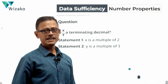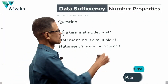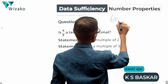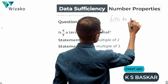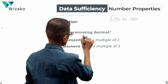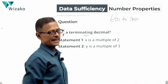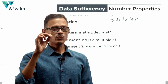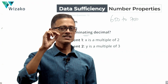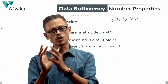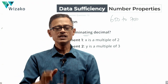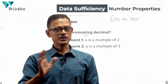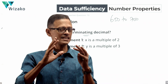This is a medium difficulty GMAT Data Sufficiency question in number properties, a 650 to 700 level question. The concept tested is terminating decimals. We will just understand what kind of a decimal is a terminating decimal and what is a non-terminating decimal — we just need to understand the definition.